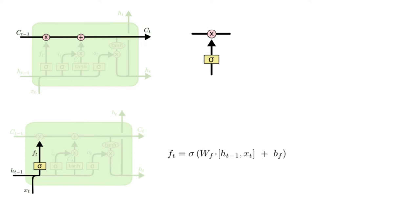Let's get back to our example of a language model trying to predict the next word based on all the previous ones. In such a problem, the cell state might include the gender of the present subject so that the correct pronouns can be used. When we see a new subject, we want to forget the gender of the old subject.